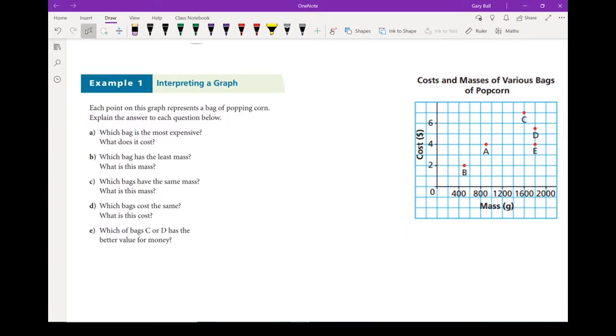Here I've got a question that talks about the cost and masses of various bags of popcorn. We've got mass on the independent axis, the x-axis. We've got cost on the dependent axis, that's the y-axis. We've got several different bags of popcorn. Let's go through the questions.